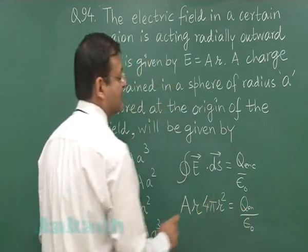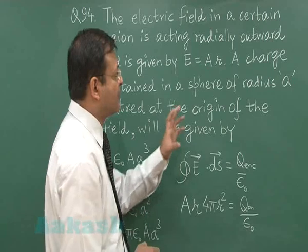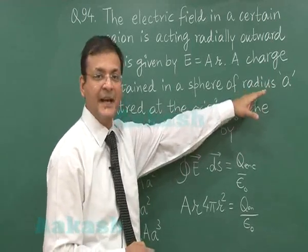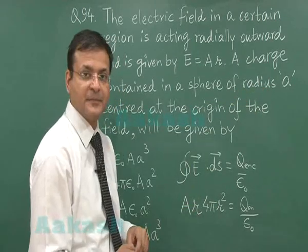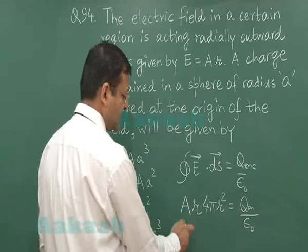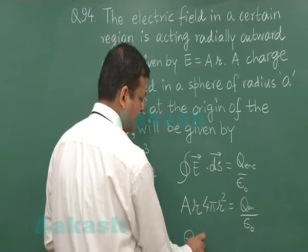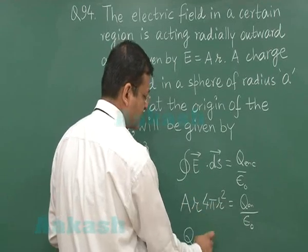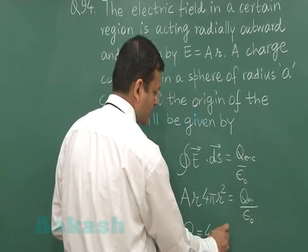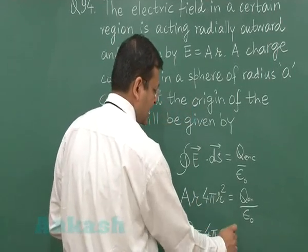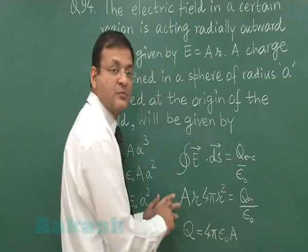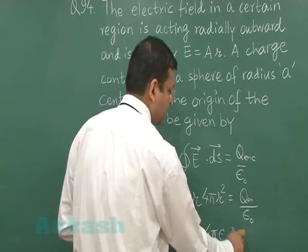Now, they have demanded the expression for particular value of R and that is radius A. So, instead of R, you should write down A and in total if you see this Q enclosed, so that will be 4 pi epsilon naught A and for R if I substitute small a, that is the radius, so that will be A cube.